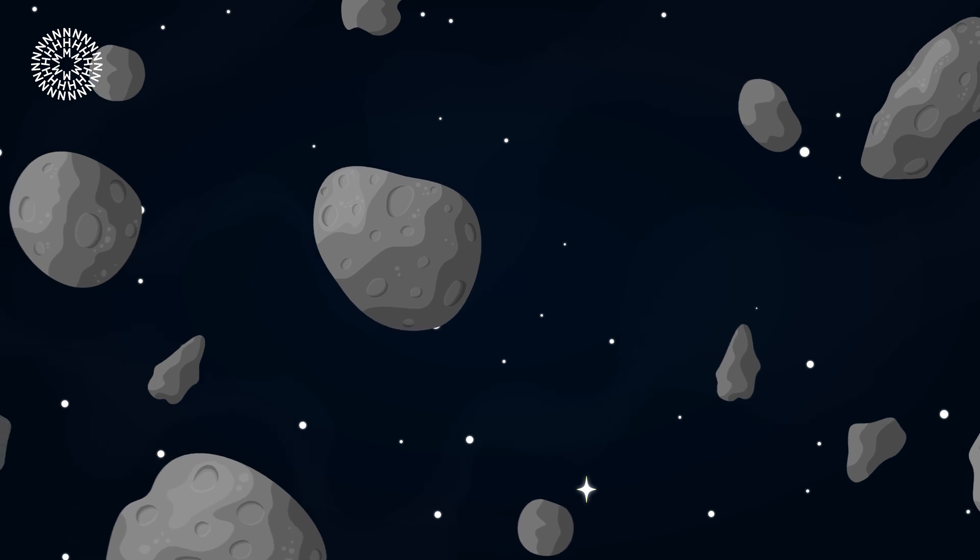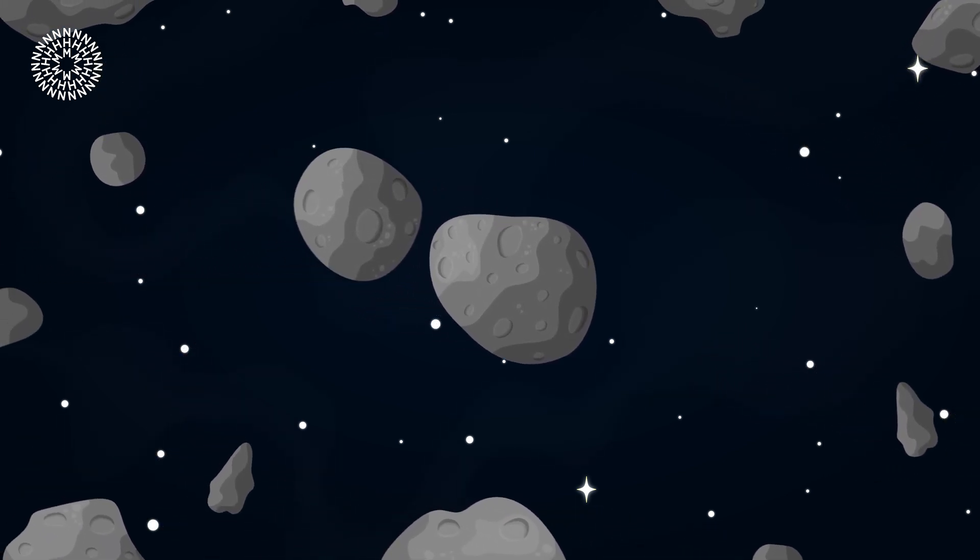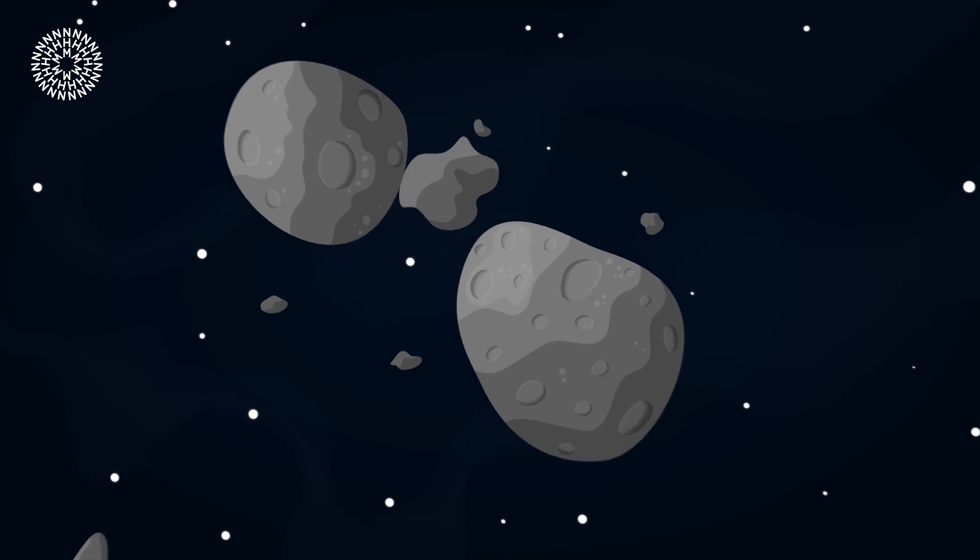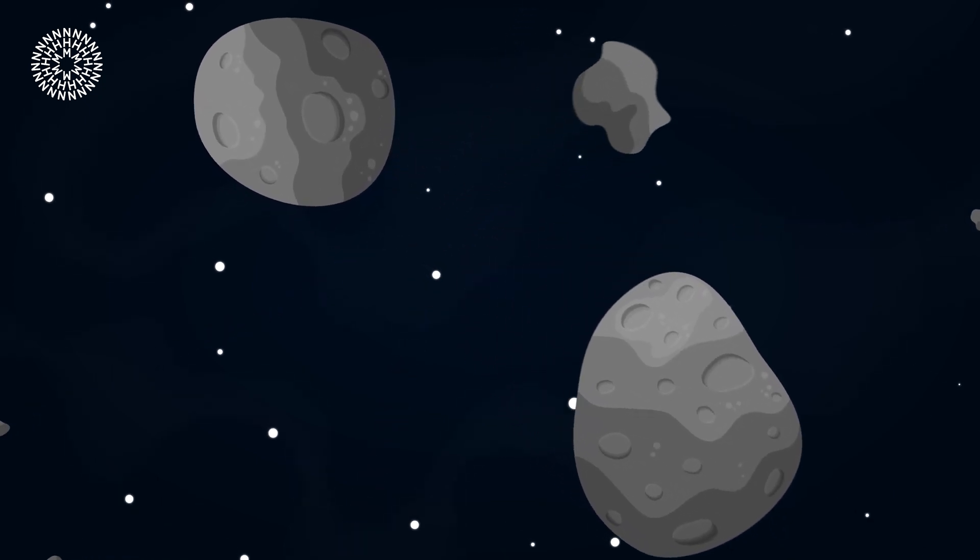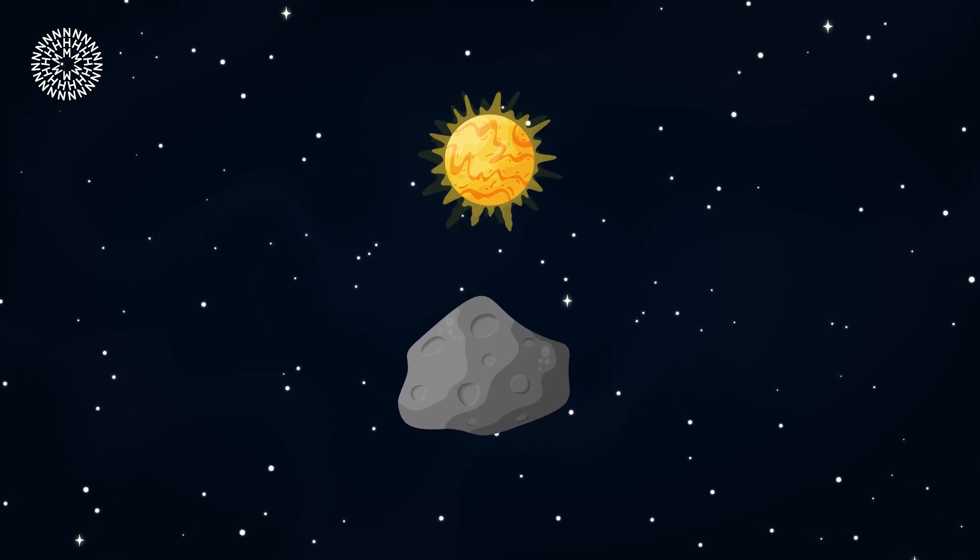In such a crowded place, the asteroids occasionally bump into each other. Sometimes they collide with so much force that a piece of rock gets knocked off and this can leave the asteroid belt. We call this new rocky object a meteoroid.